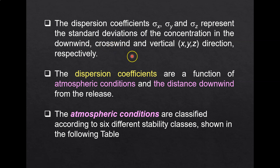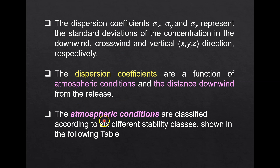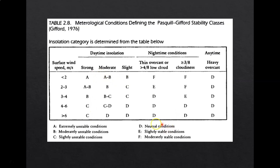The dispersion coefficients are a function of atmospheric condition and also the distance downwind from the release. Because we already have the assumption that downwind and crosswind are the same, the atmospheric conditions are classified according to six different stability classes, which I will show in the next table.